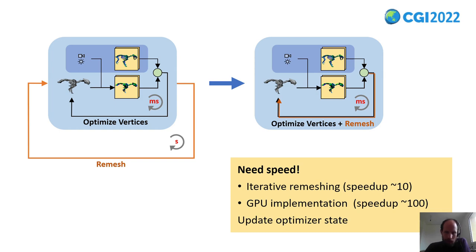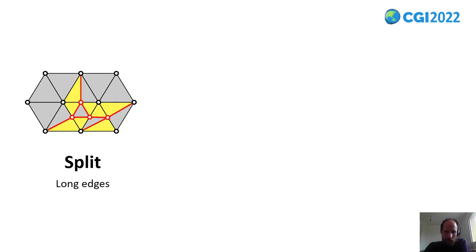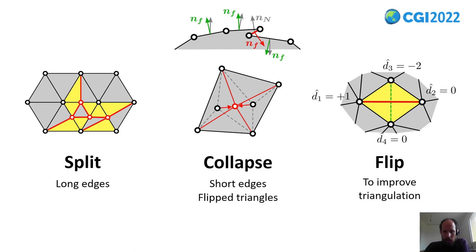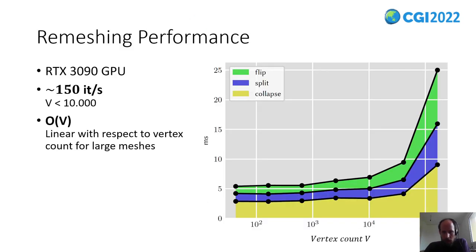It's also important that now as we don't restart the optimizer, but we remesh inside of the optimizer, we need to update the internal state of the optimizer. You can read the details of the remeshing steps in the paper. We split long edges, we collapse short edges, we also collapse suspicious triangles, and we flip triangles to improve the triangulation quality. The first method, split, can easily be parallelized without interference. For the two other steps, we need to be careful to avoid topology changes. You can see here in this benchmark that our method needs six to seven milliseconds for small meshes, and then it grows linearly with respect to vertex count for large meshes.